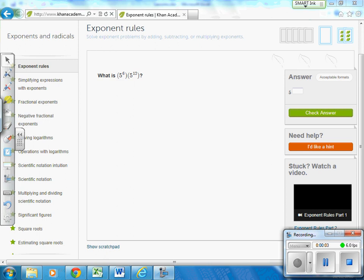Alright, exponent rules. You have three scenarios. One, when you're multiplying, in which this case is happening here, where we are multiplying 5 to the 6th power times 5 to the 12th.